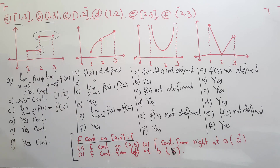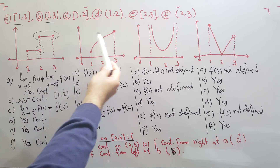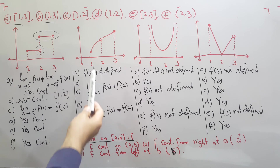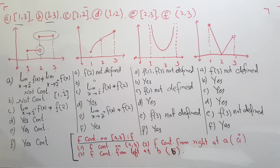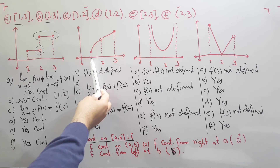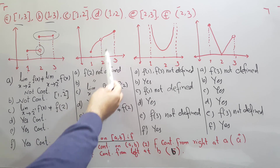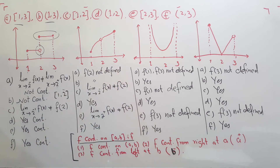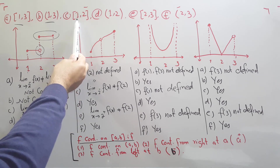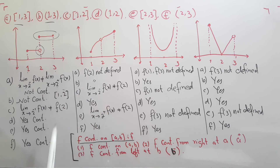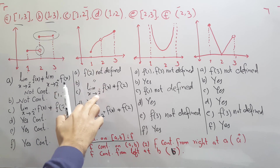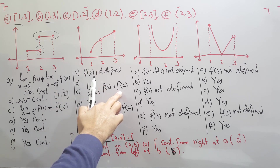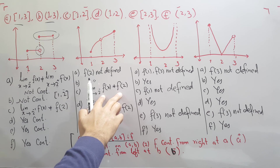Let's go to the second graph. In the closed interval [1, 3], point 2 is again not defined, so the function is not continuous. In the open interval (1, 3), even without including 1 and 3, point 2 is still not defined, so it is not continuous. For the closed interval [1, 2], the limit from the left at 2 does not equal the function value at 2, so it is not continuous.